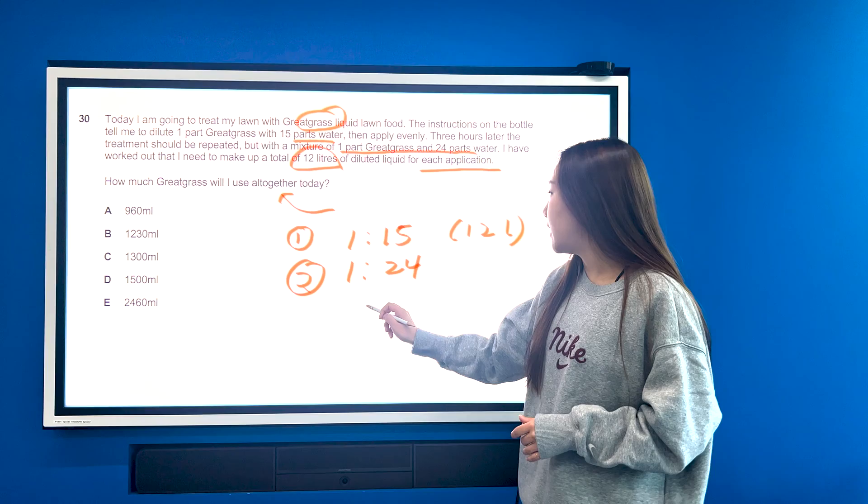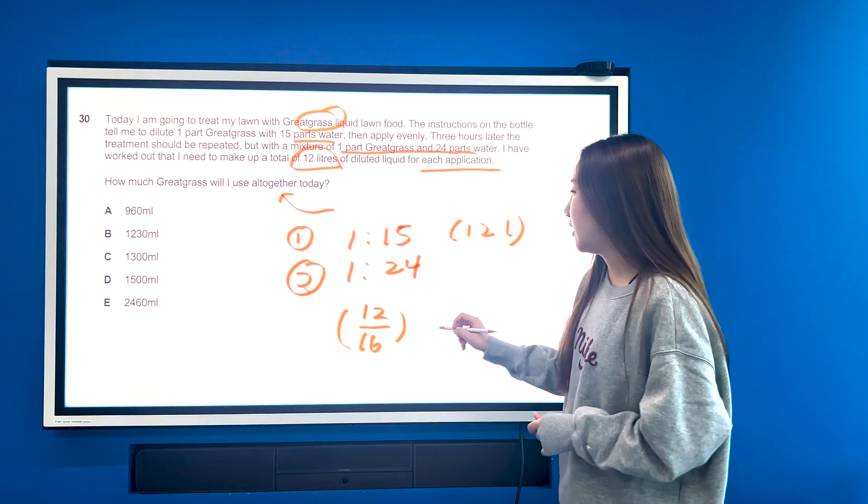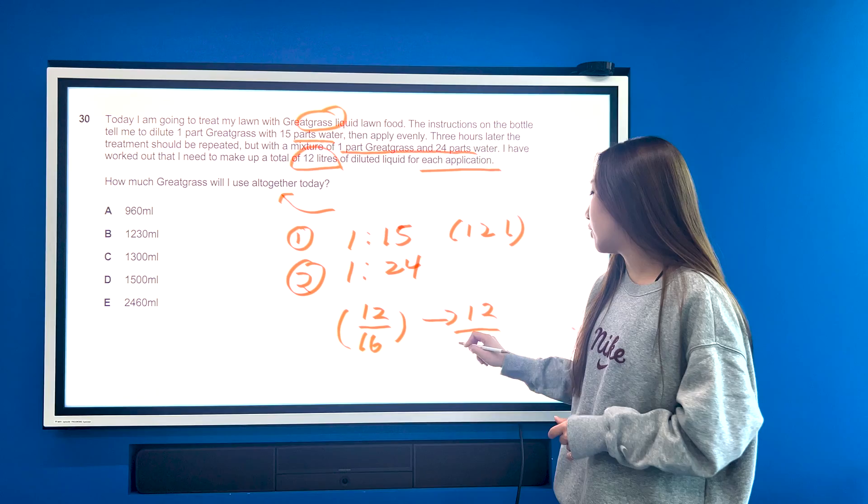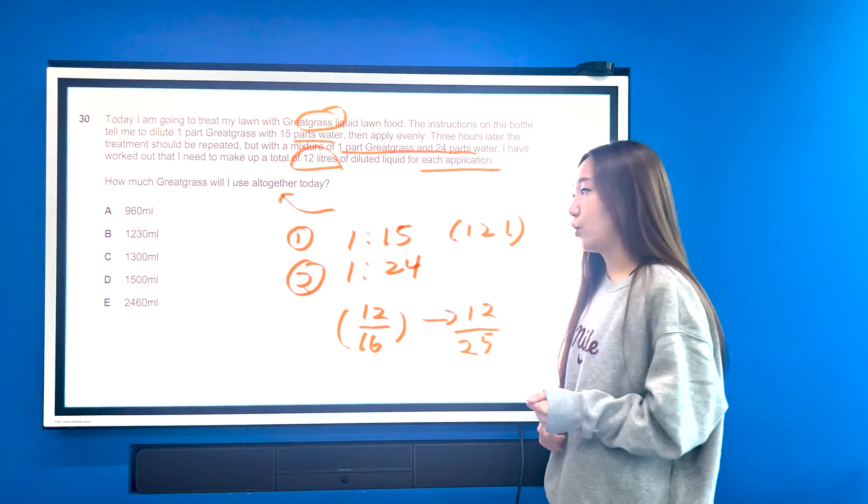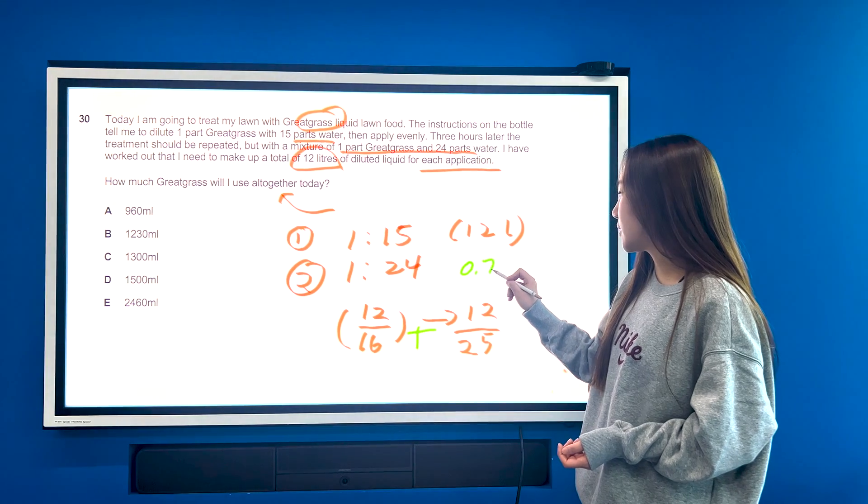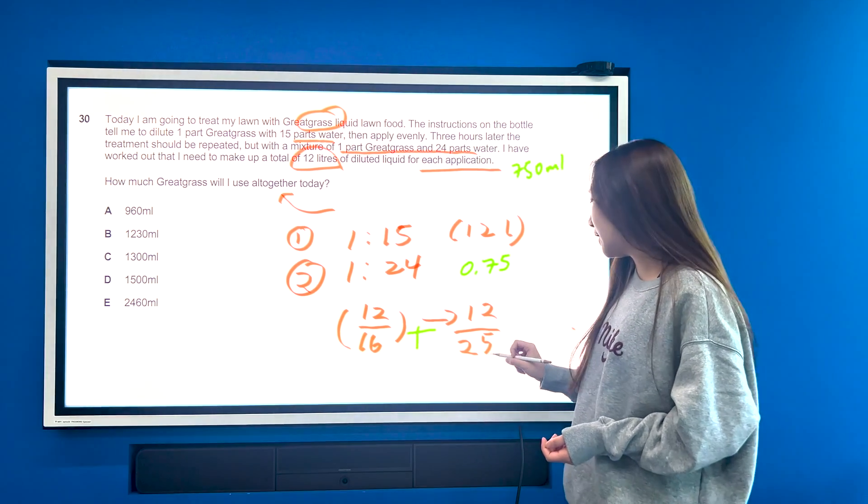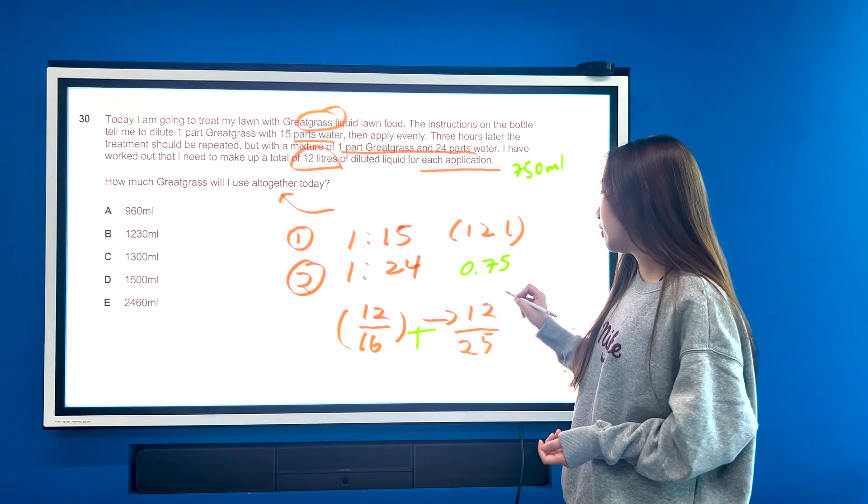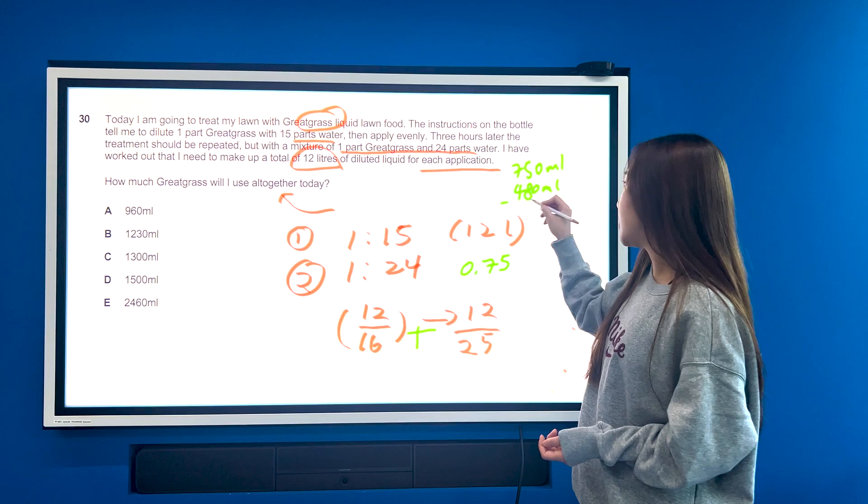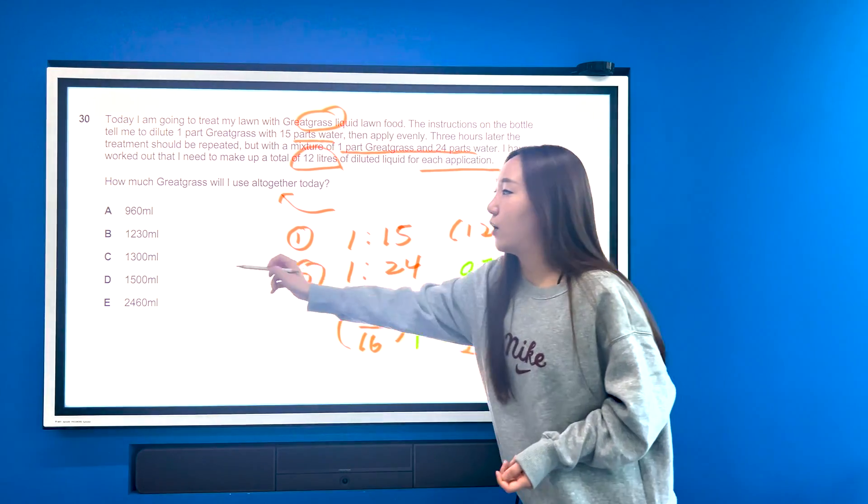So in application number one, we need a mixture of one part Greek grass to 15 parts water. And then in application number two, we're looking at one part Greek grass to 24 parts water. And each time we're looking at 12 litres that we need to create in total. So knowing your ratios, all you need to really do is you're looking at 12 over 16 in that first application. And then in the second case, you're basically looking at 12 over 25 is going to be the amount of Greek grass. So all you then need to do is add these two together. Now so for the 12 over 16, this is quite simply 0.75 because it's 3 over 4. So that's going to be 750 ml. At the same time we need our 12 over 25. Now 1 over 25 is 0.04. You multiply that through by 12 to give you 480 millilitres. And then we just want to add those two together. And that should give us 1,230 millilitres in total. So our answer here is going to be B.